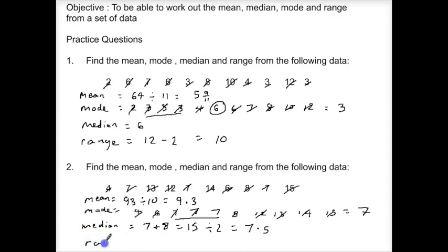Finally then our range. Our range here, the difference between the largest number, well the largest number in this case is 15 and our smallest number in this one here was 4. So 15 take away 4 gives us our range of 11.